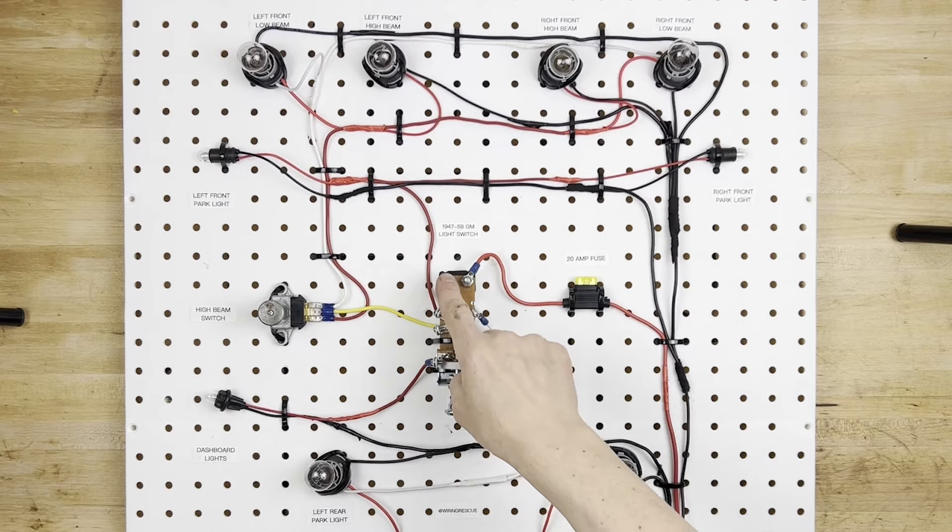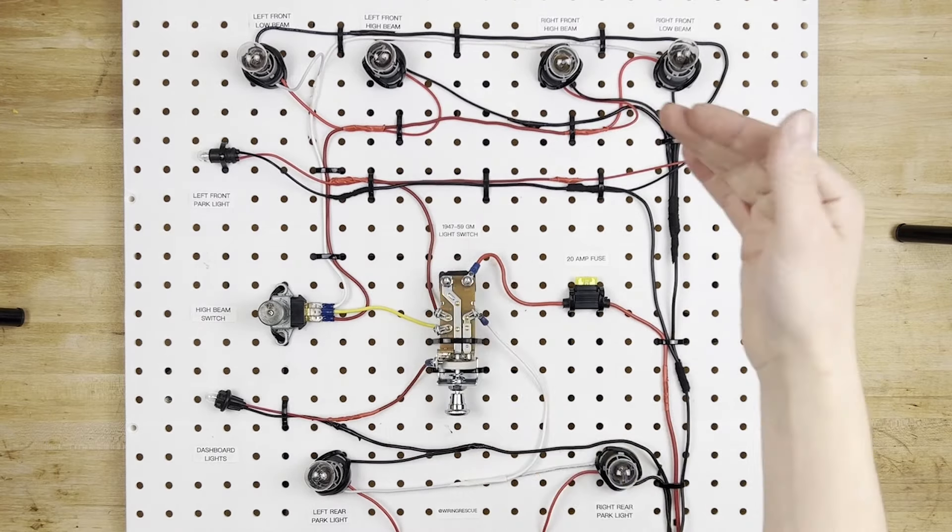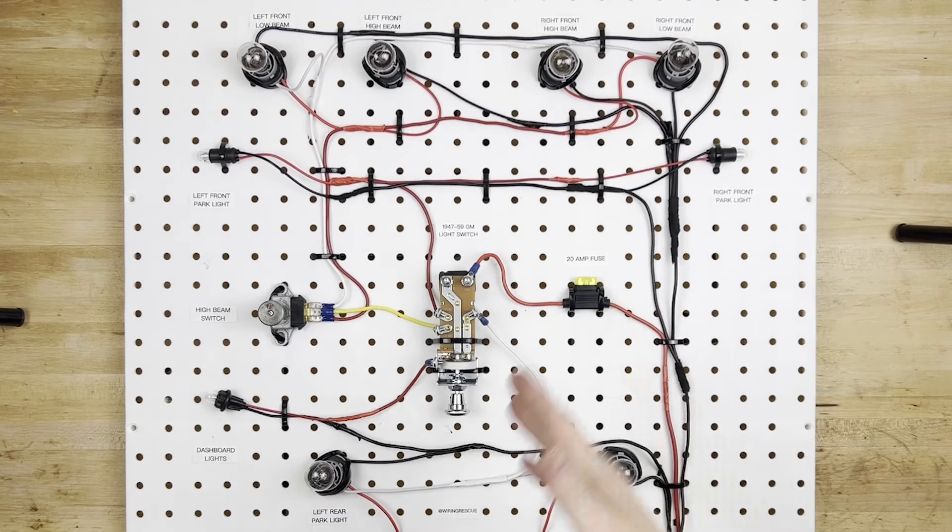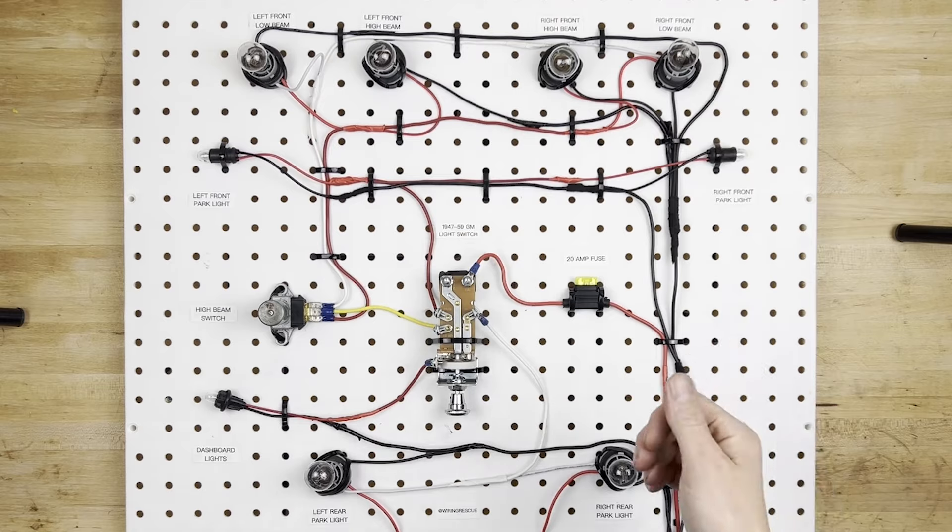So we have power coming in, and then we have five outputs. So let's go over those. Now this one here is not being used on this circuit, because this would probably be used to go to a dome light switch, so that when you open the door, there's power to the dome light switch, and therefore it turns on your dome light.